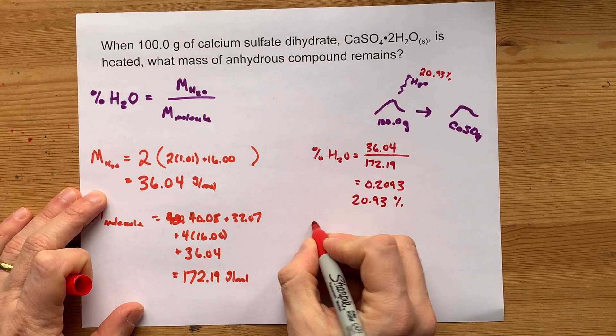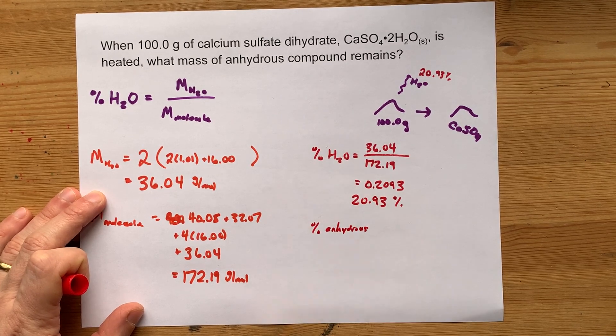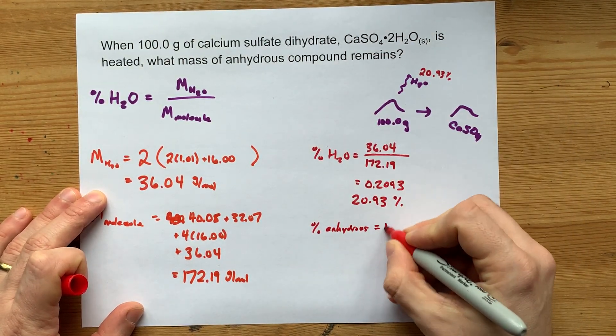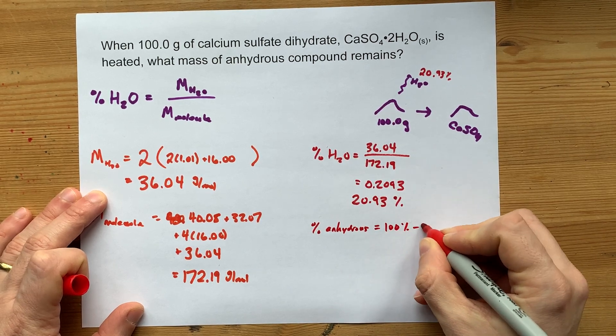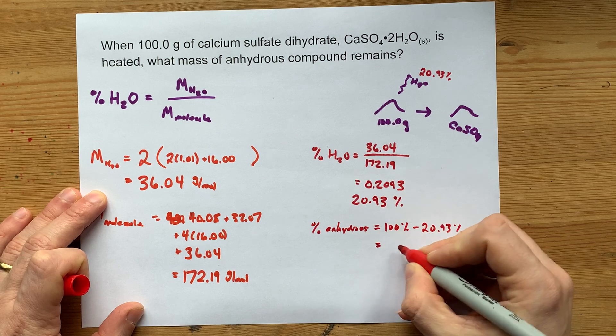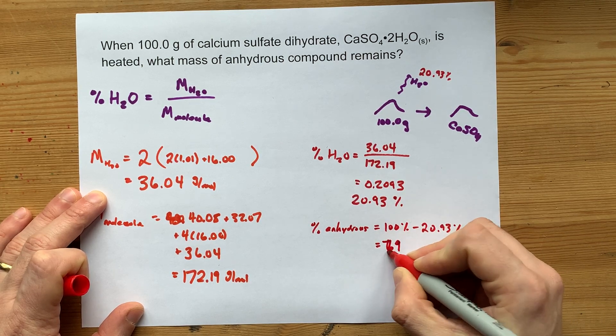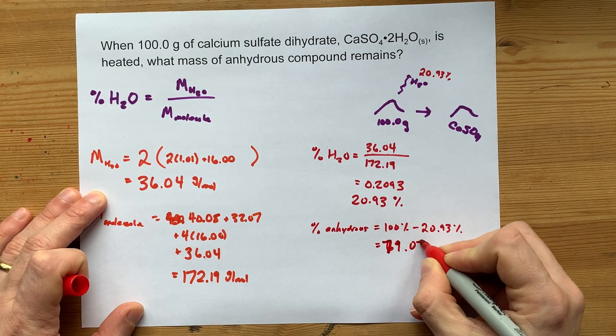If you want, you can say that the percent by mass of the anhydrous ionic compound here is going to be 100% minus 20.93%. That turns out to be 79.07%.